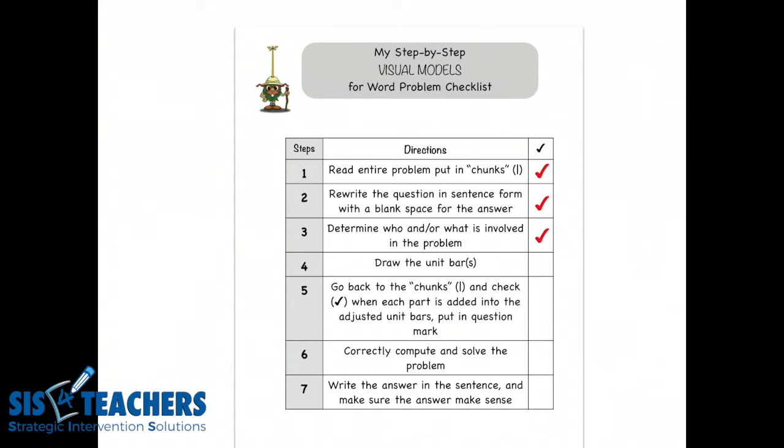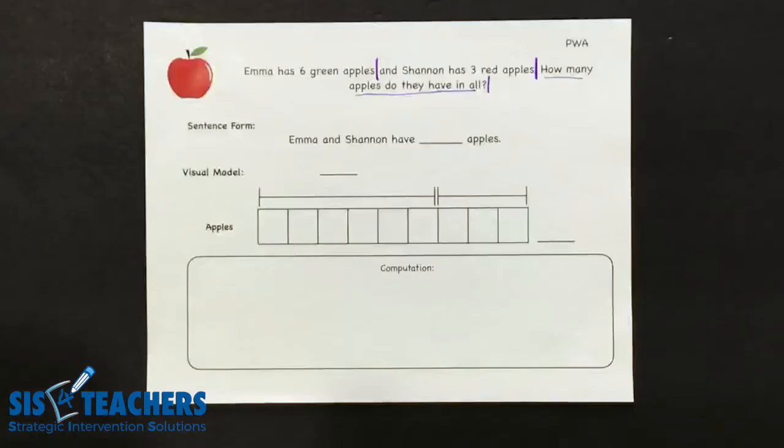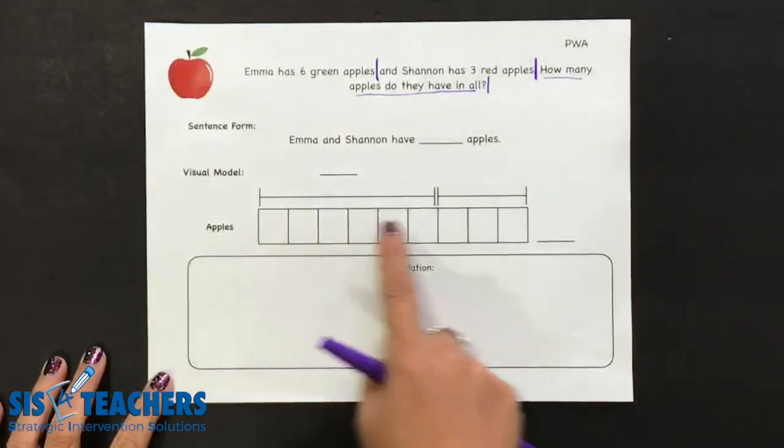Now when we get to step four in the scaffolded journal at the beginning, especially in the first half of the school year, we want to provide a scaffold of the proportional bar for first graders as they start to develop and mentally understand this process. So we're going to take a look to see that we have units, bars that will match this problem perfectly.